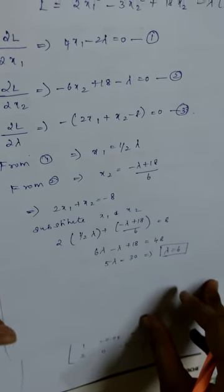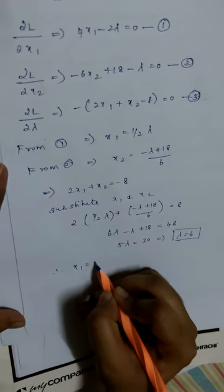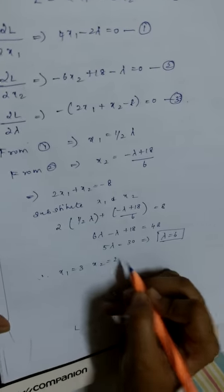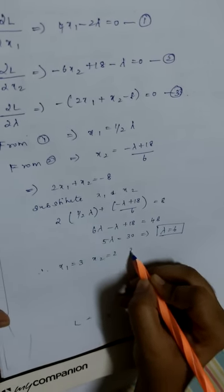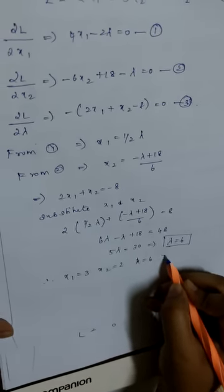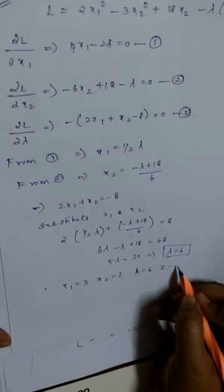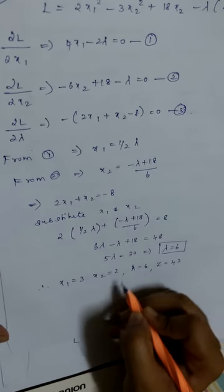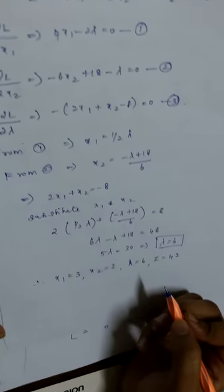We have x1 equal to 3, x2 equal to 2, and lambda equal to 6. On substituting the values in the given equation, we get z equal to 42.